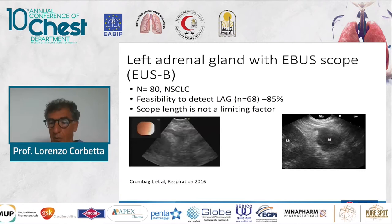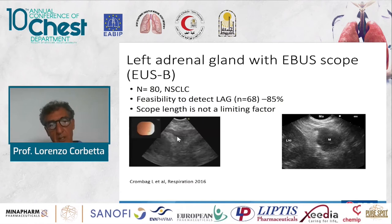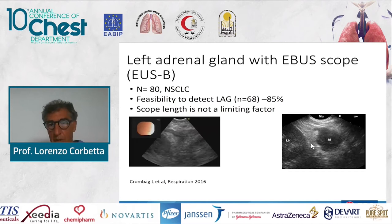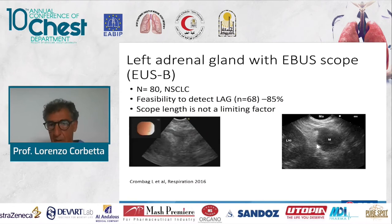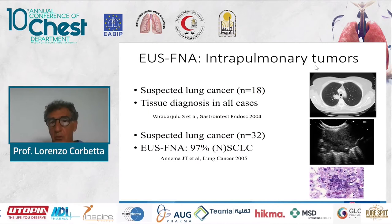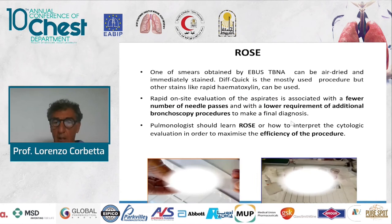With EBUS it is also possible to reach the left adrenal gland. You can see the shape of the normal left adrenal gland — a seagull shape — and also a metastasis of the left adrenal gland, which is very important in the general evaluation of a patient with suspected metastasis. It is also possible to reach intrapulmonary tumors when they are adjacent to the esophagus, trachea, or bronchi.